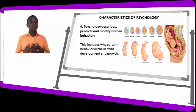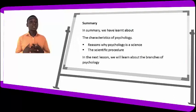So the characteristics of psychology include: psychology describes, predicts, and modifies human behavior; psychology is a discipline; psychology studies human and animal behavior; and psychology is a science, which adopts scientific procedures in carrying out its research. In summary, we have learned about the characteristics of psychology, seen why psychology is a science, looked at the scientific procedure, and noted that psychology predicts and describes human behavior.